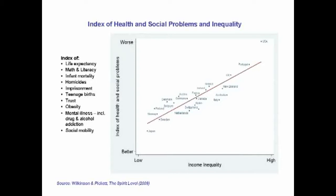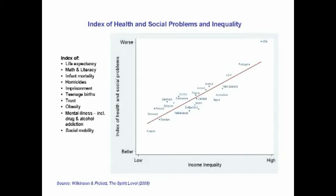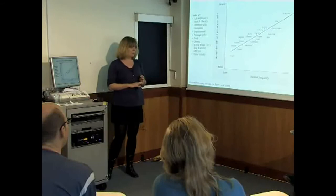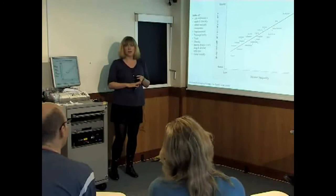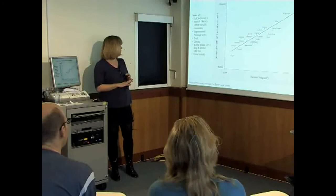What I'm going to show you first is what we're calling an index of health and social problems — an index we've made up of some of the problems we were talking about earlier. So it contains trust, life expectancy, infant mortality rates, obesity, mental health, children's educational performance, rates of violent crime, imprisonment, and social mobility as well.